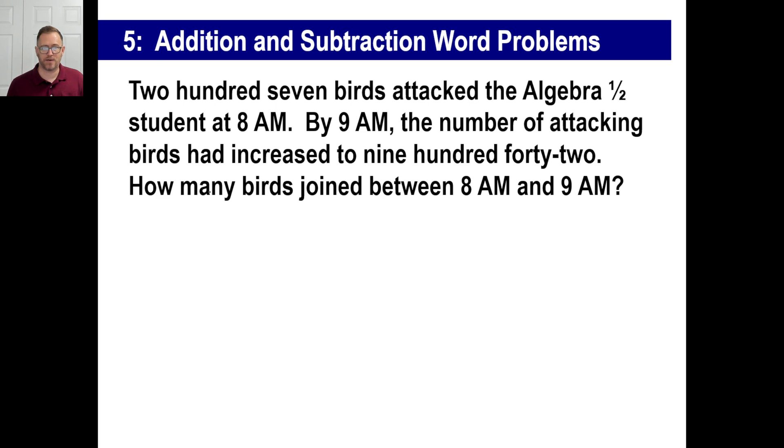In other words, you have a couple hundred birds, 207. Then some of them had increased, something happened here, and then at the end they had increased to 942. What happened here? We added a bunch of birds. How are we going to figure out how many birds were added based on this number and on that number?